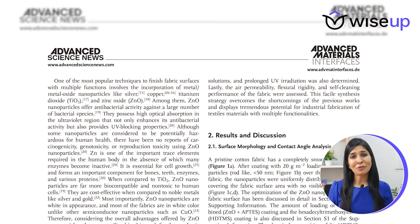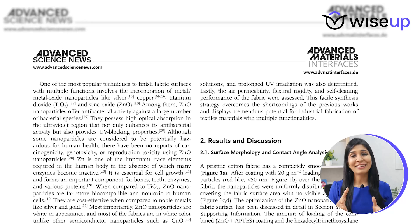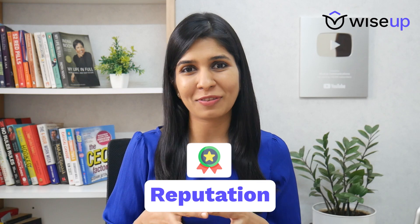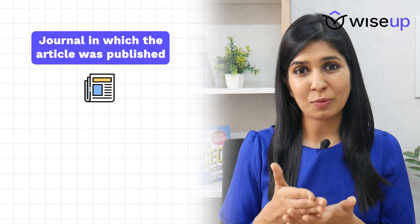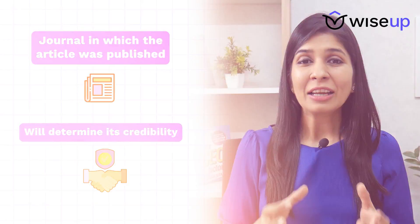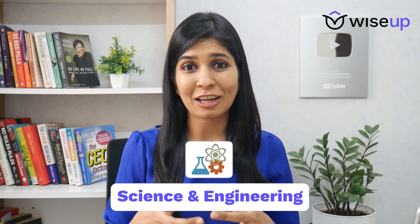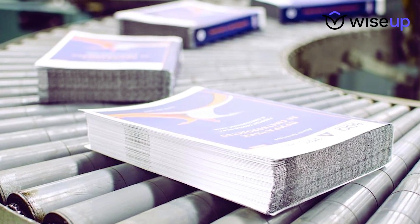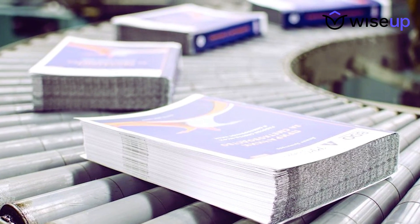Once you've read the title, the next thing you should read is the journal name, because this will give you an understanding of the overall reputation of the article. The journal in which the article was published determines its credibility. For different fields of research — for example, in the science and engineering field — there are certain publishers which are reputed.